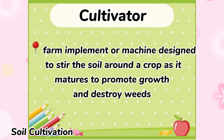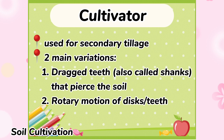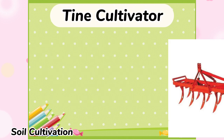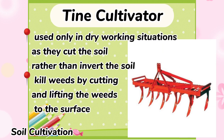Cultivator is a farm implement or machine designed to stir the soil around a crop as it matures to promote growth and destroy weeds. It is any of several types of farm implement used for secondary tillage and has two main variations: the dragged teeth, also called shanks, that pierce the soil, and the rotary motion of discs or teeth. Tine cultivator is used only in dry working situations as they cut the soil rather than invert the soil.